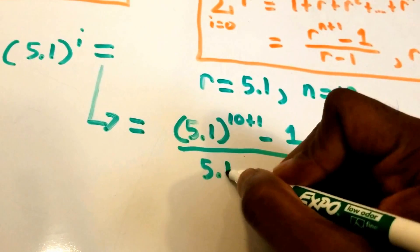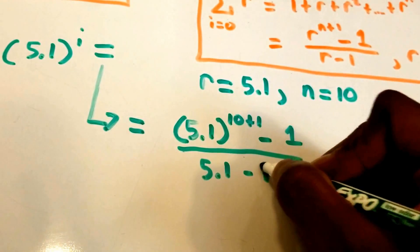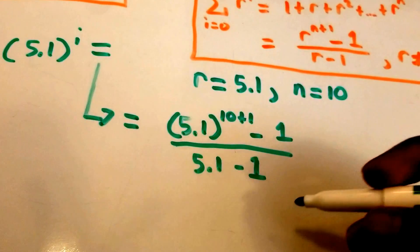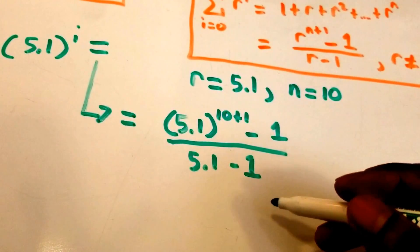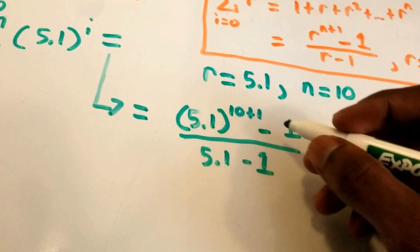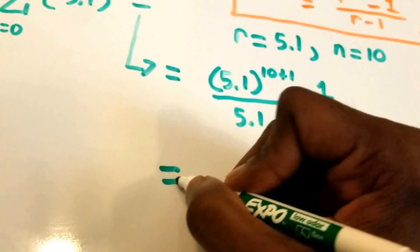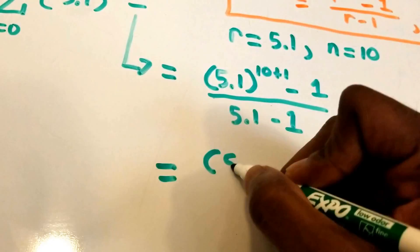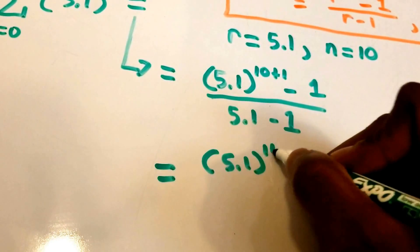So what's this equal to? This is equal to (5.1)^11 - 1, all over 4.1. Now I've already done this calculation, this 5.1 to the power of 11, because it's pretty high.